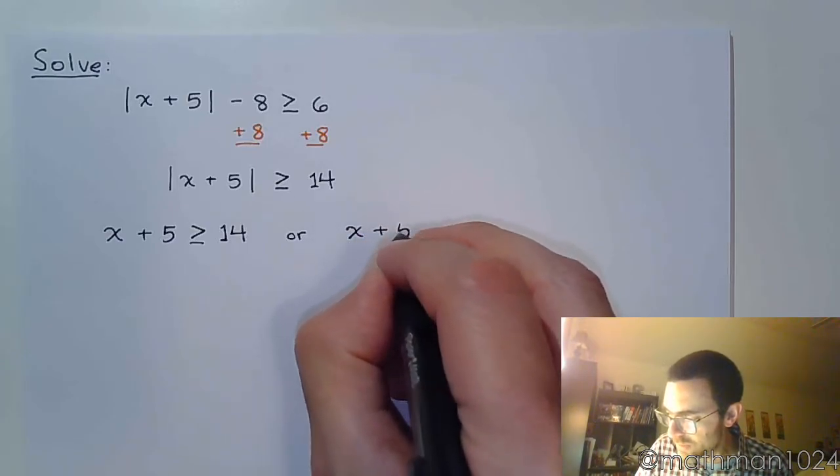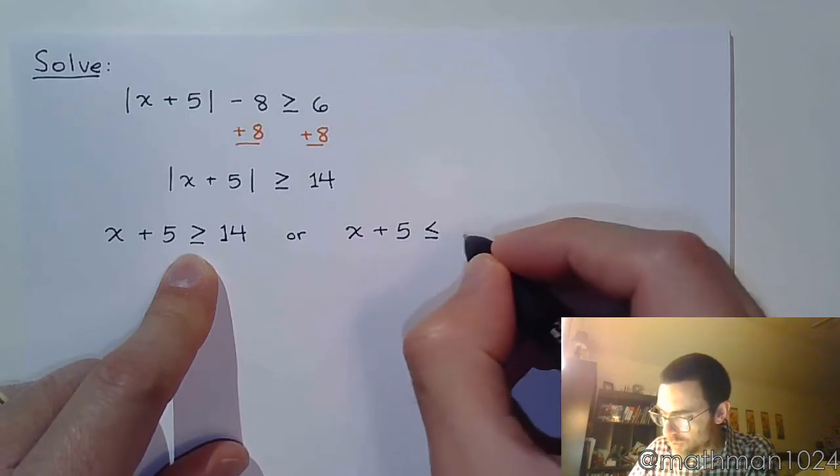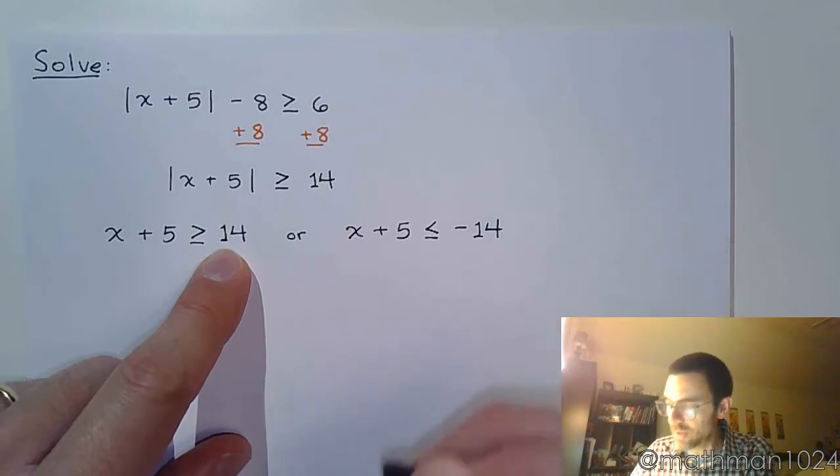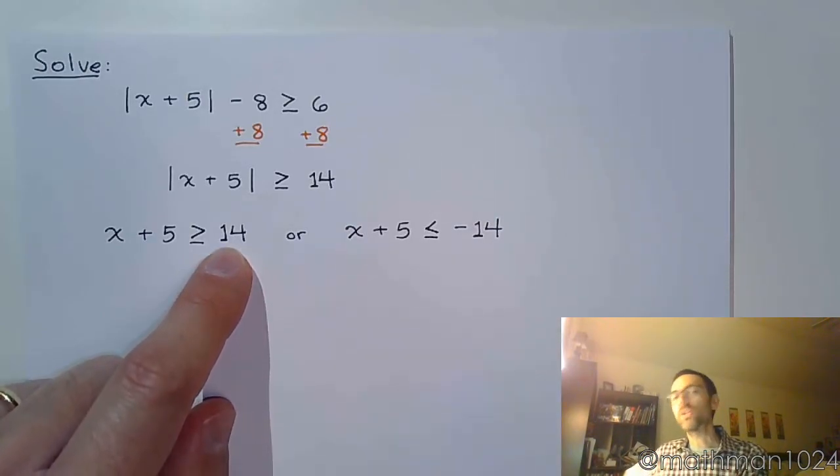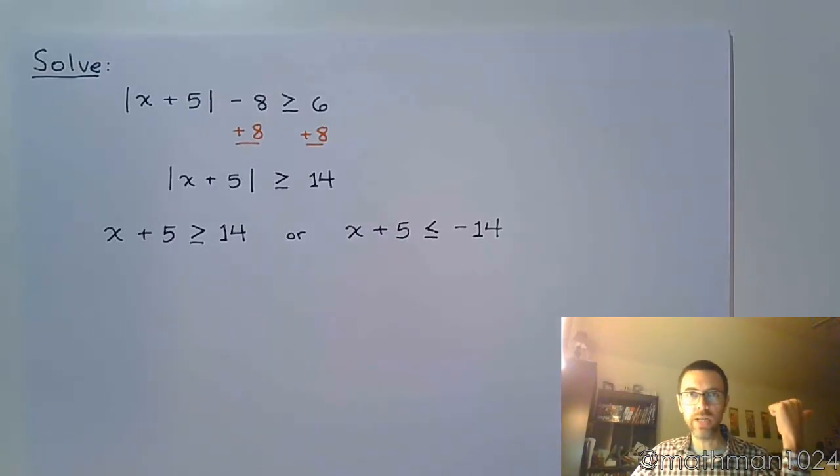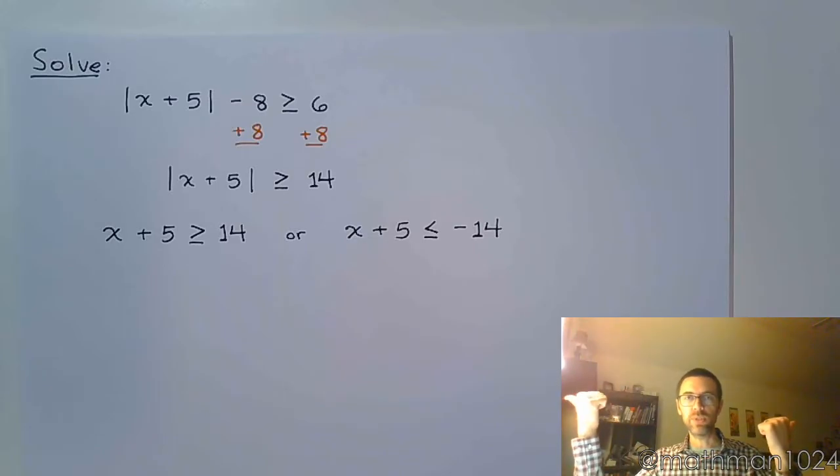The other option is when you have x plus 5 change the direction here to be less than or equal to and change the sign here to be negative 14. We're saying you want to be to the right of 14 or to the left of negative 14.